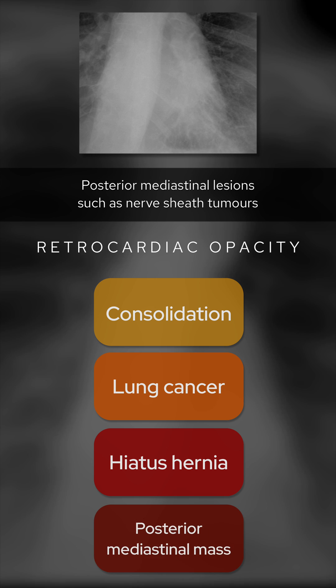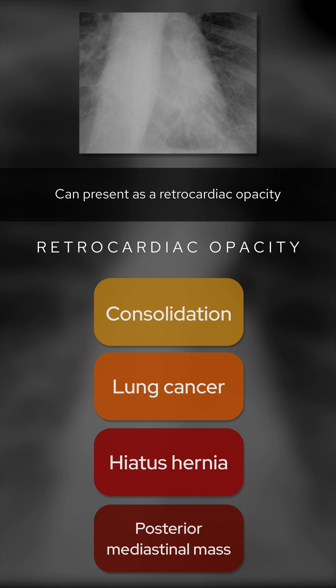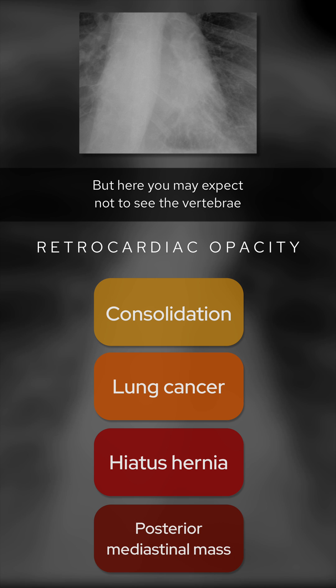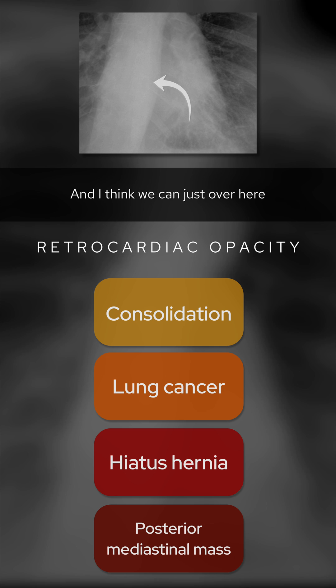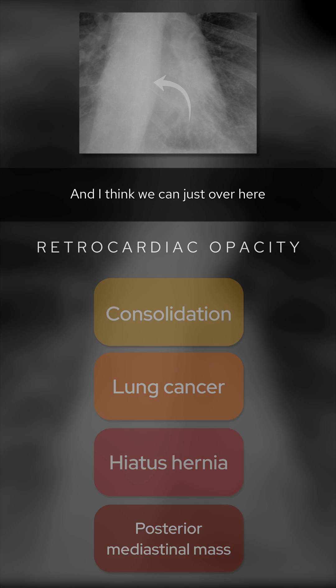Posterior mediastinal lesions, such as nerve sheath tumours, can present as retrocardiac opacity, but here you may expect not to see the vertebrae, and I think we can just make them out here.